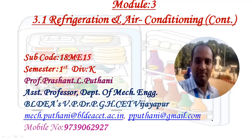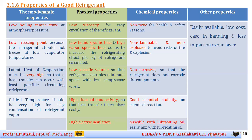The properties of a good refrigerant are characterized by four main categories: the first is thermodynamic properties, the second is physical properties, the third is chemical properties, and the fourth is other properties. We will discuss all these properties one by one, starting with the thermodynamic properties.